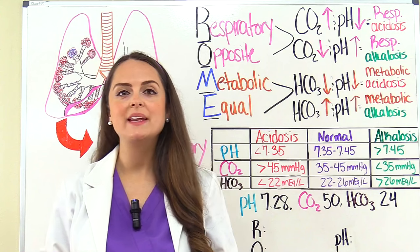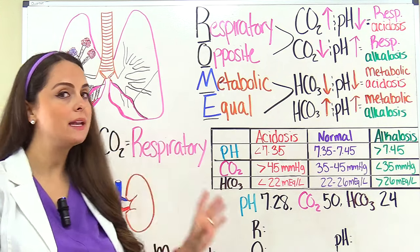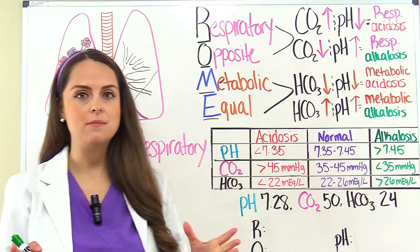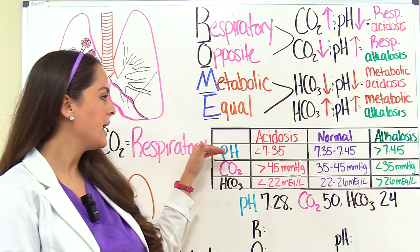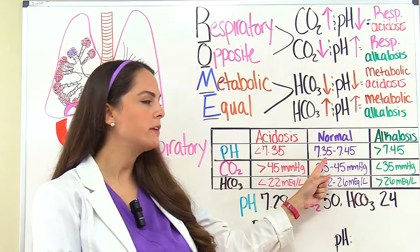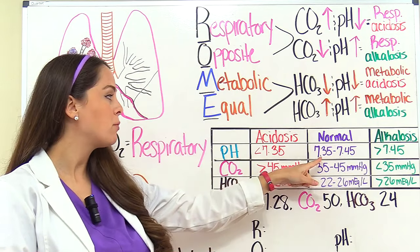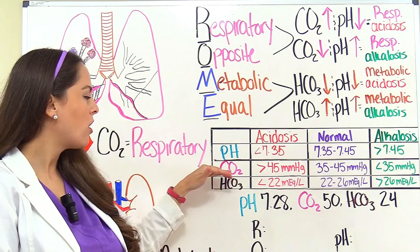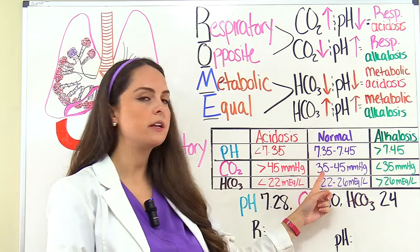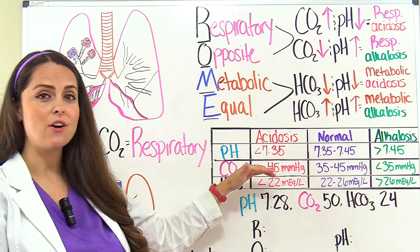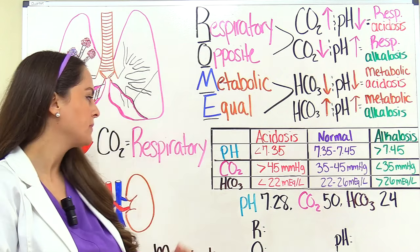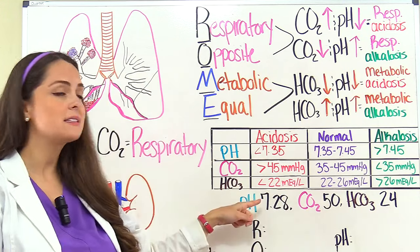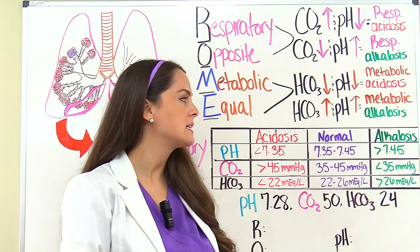Before you try to solve an ABG problem, you have to have this table committed to memory. A normal blood pH is 7.35 to 7.45 — less than 7.35 is acidotic, greater than 7.45 is alkalotic. Normal CO2 is 35 to 45 — greater than 45 is acidotic, less than 35 is alkalotic. Normal HCO3 is 22 to 26 — less than 22 is acidotic, greater than 26 is alkalotic.